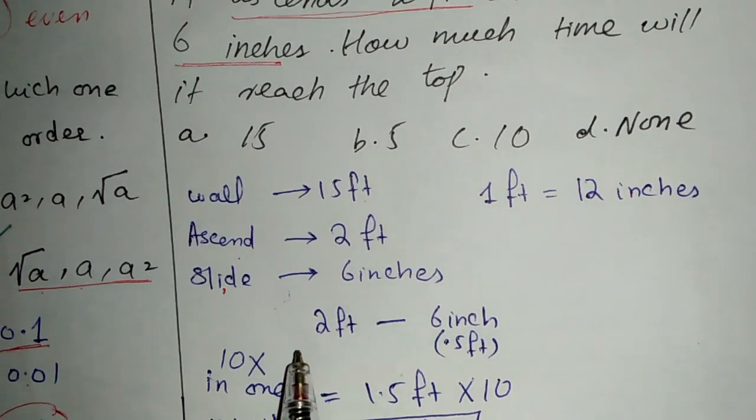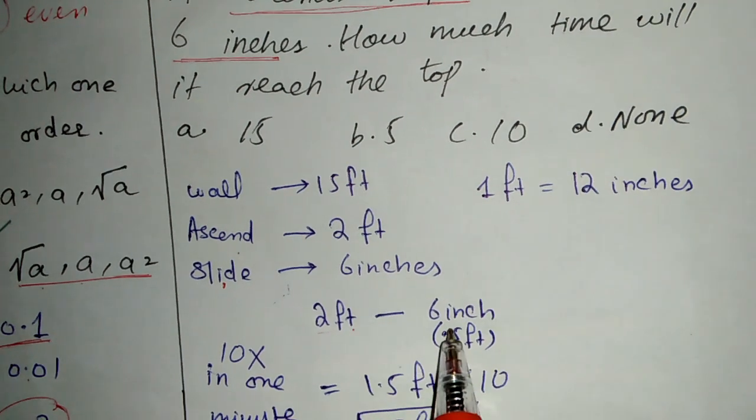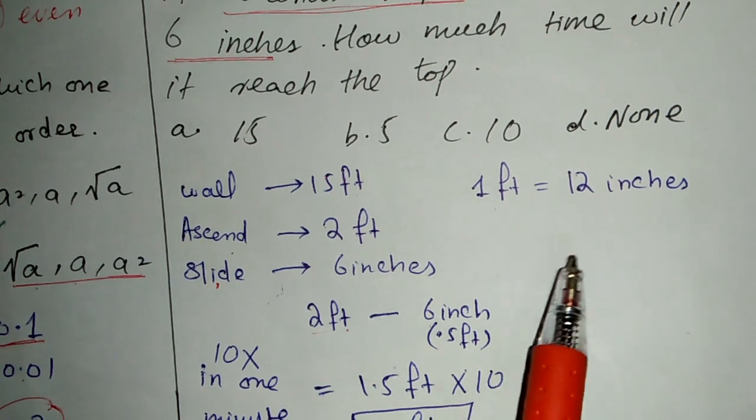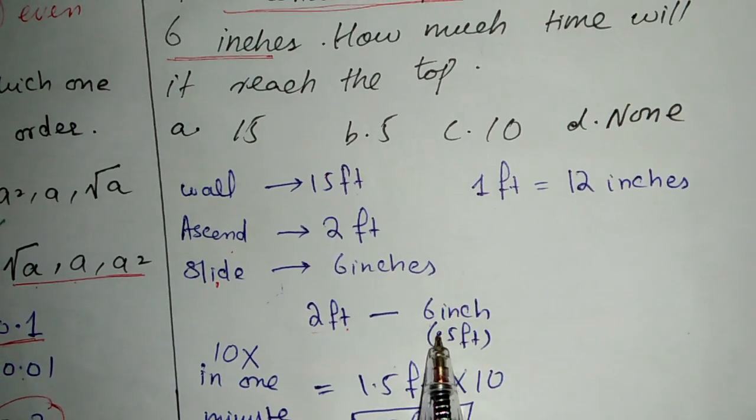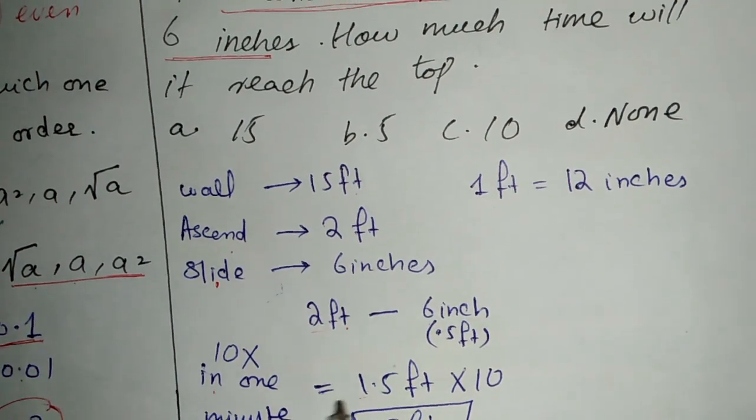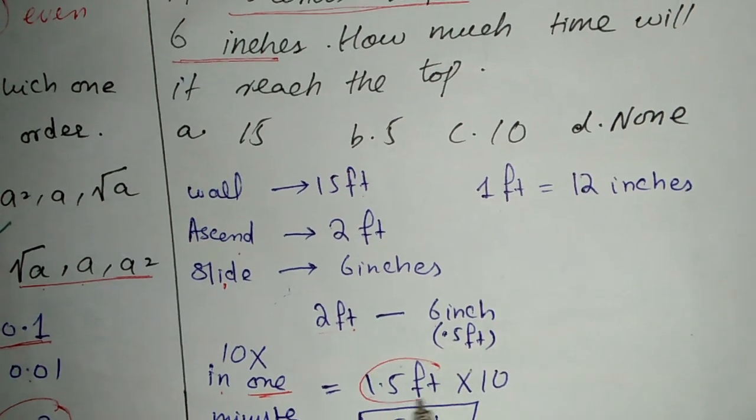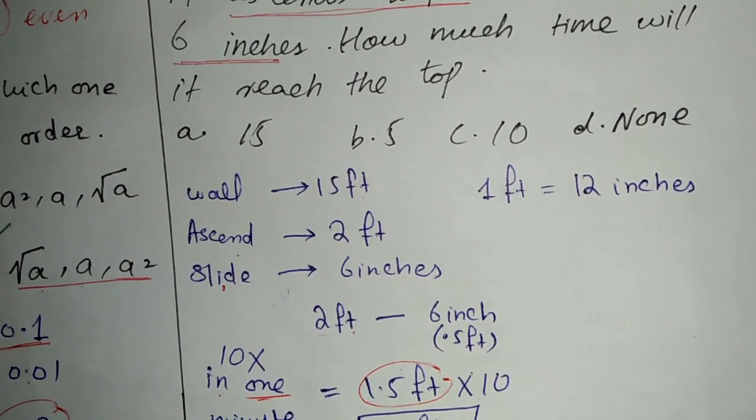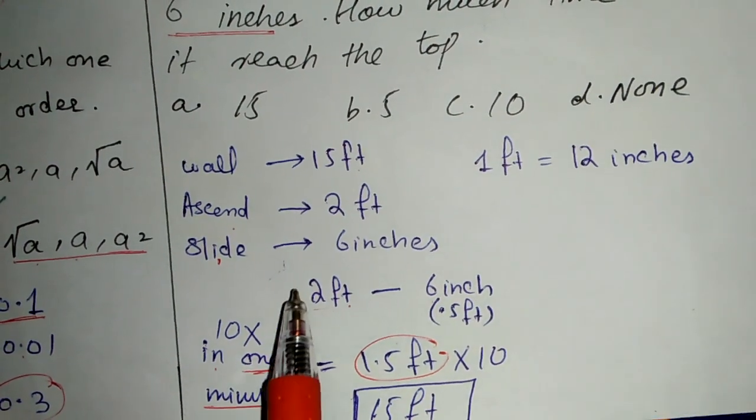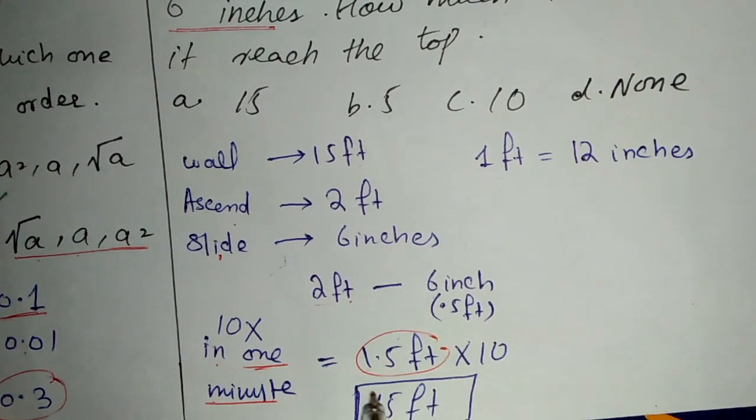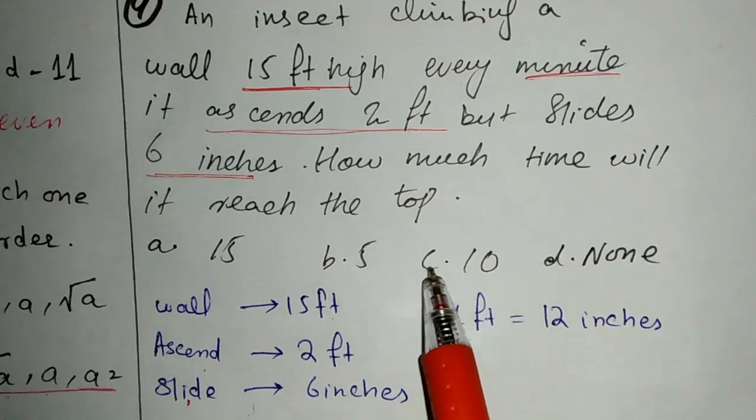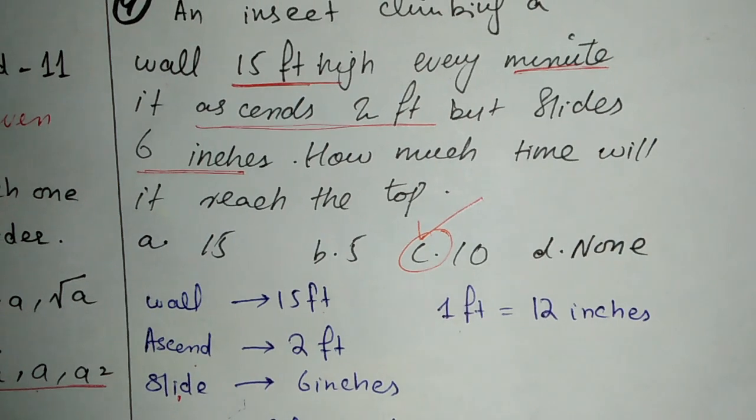The insect ascends 2 feet but slides 6 inches. 6 inches equals 0.5 feet. So the net distance covered is 2 feet minus 0.5 feet, which equals 1.5 feet per minute. The wall is 15 feet high. At 1.5 feet per minute, multiply by 10 to get 15 feet. So it takes 10 minutes to reach the top.